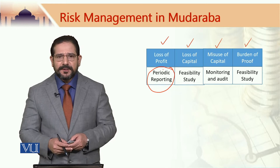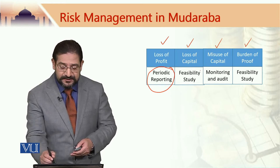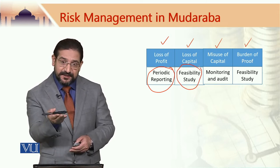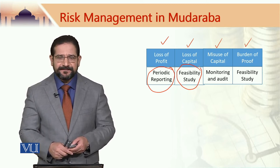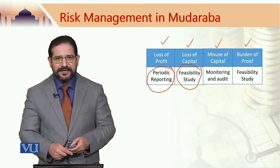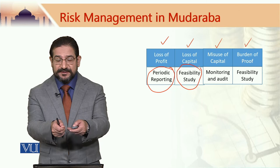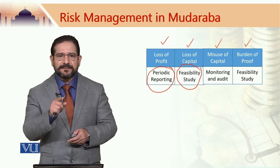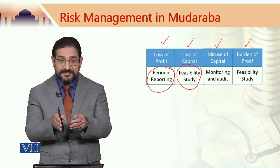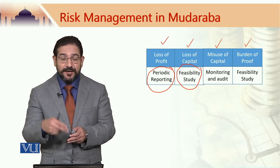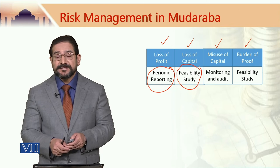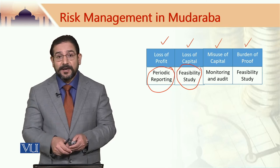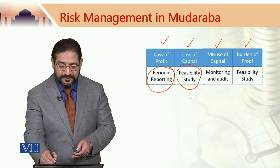The chances of loss of capital can be minimized by asking the Mudarib to provide a feasibility study even before the Mudarabha business is started. Many contemporary scholars say that if a Mudarib has provided a feasibility study, it should be deemed an authentic document. This means that if there is any deviation in the actual business from the feasibility study and a loss occurs, the Mudarib would be held responsible. So this is another risk management tool.